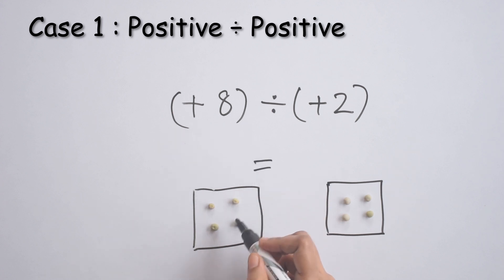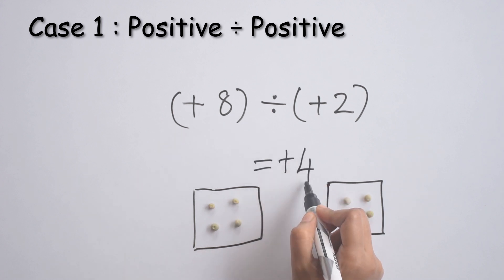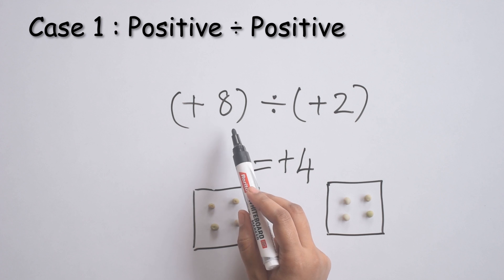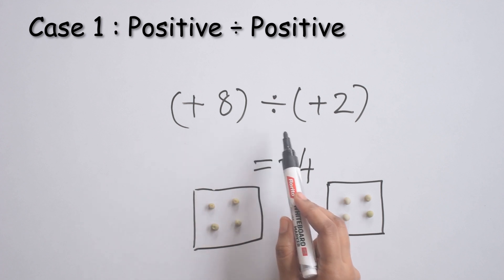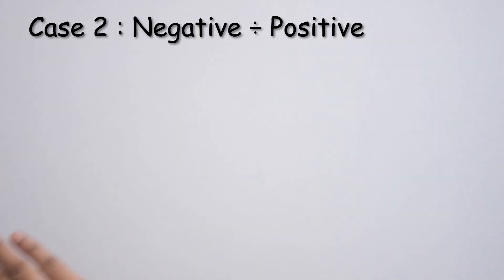Since they are green peas, the symbol is positive. So, positive 8 divided by positive 2 is equal to positive 4.